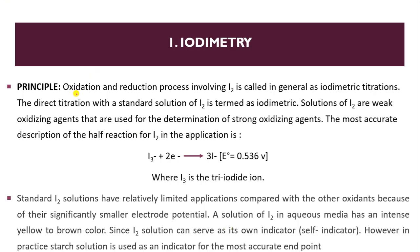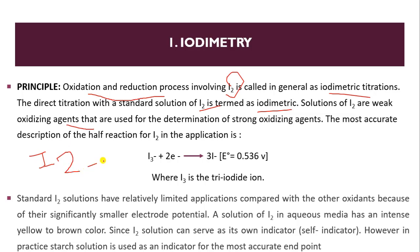What is the basic principle of iodimetric titration? As we are discussing the redox reaction, the oxidation and reduction process involving iodine is called, in general, iodimetric titration. It is a type of direct titration with a standard solution of iodine. Iodine (I₂) acts as a weak oxidizing agent and is used for the determination of strong reducing agents.